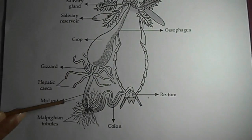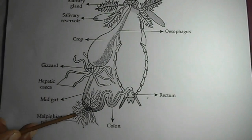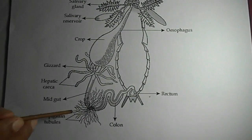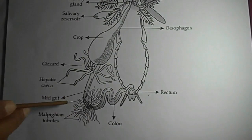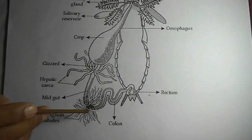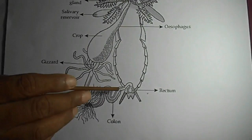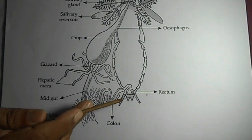After the hepatic caeca, this tube-like structure is called the mesenterone or midgut. The midgut continues up to the starting point of the Malpighian tubules. These are greenish, yellowish tubules which emerge from the digestive tract. This is actually the main excretory organ. From this point, the last part is called the hindgut, and it consists of the colon.